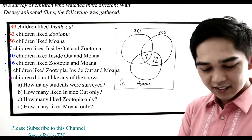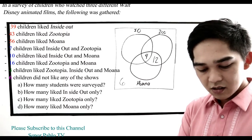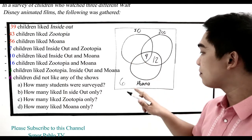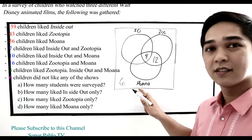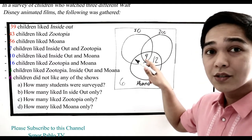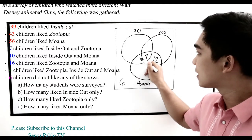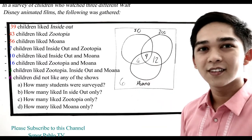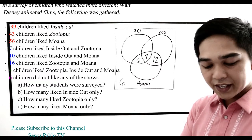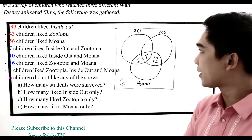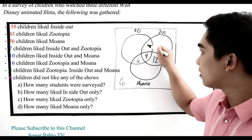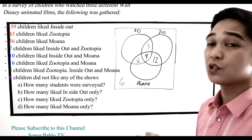Next, 7 children like Inside Out and Zootopia. We already have 4 in the center, so 7 minus 4 equals 3. We write 3 in the intersection of Inside Out and Zootopia only.